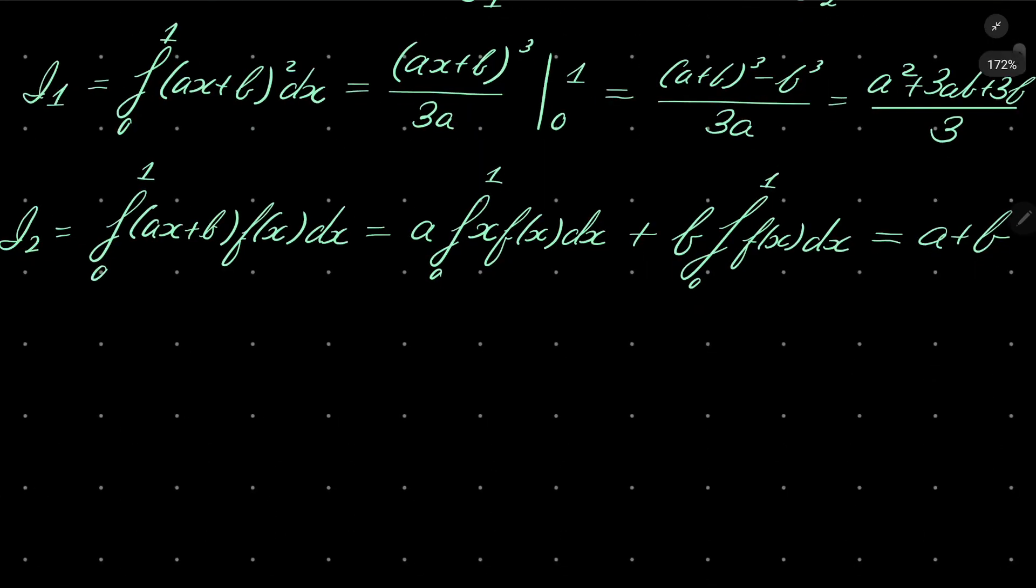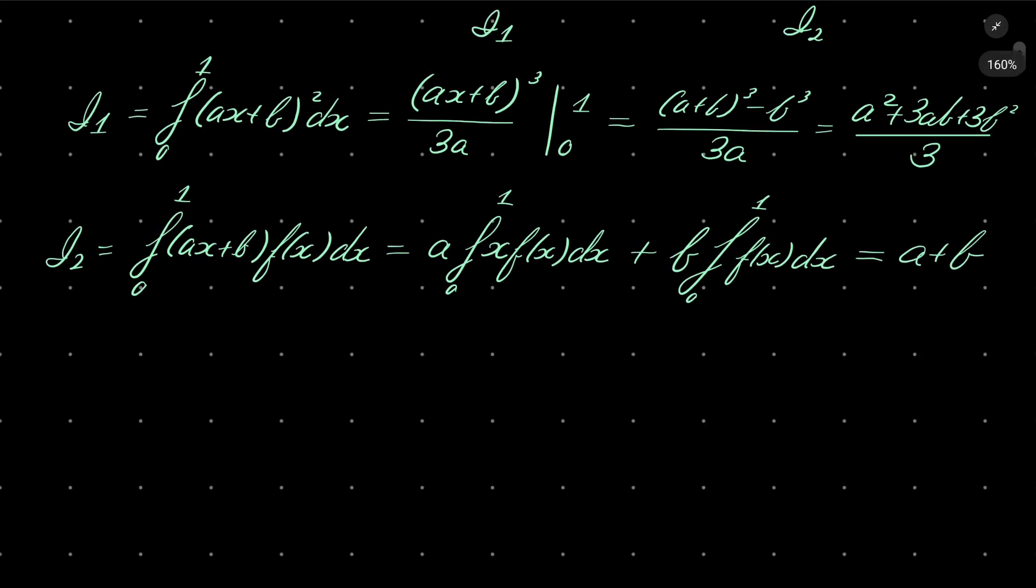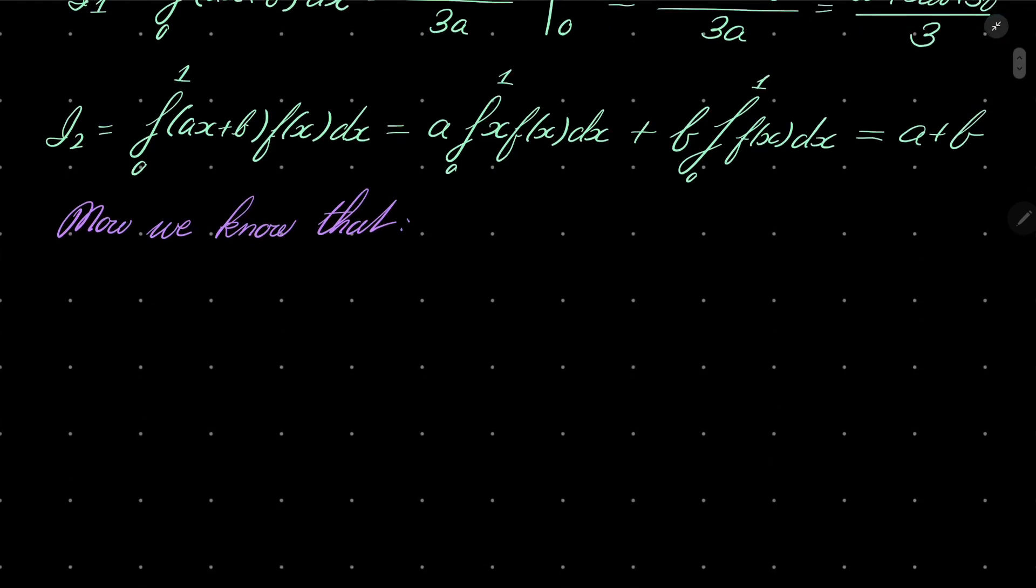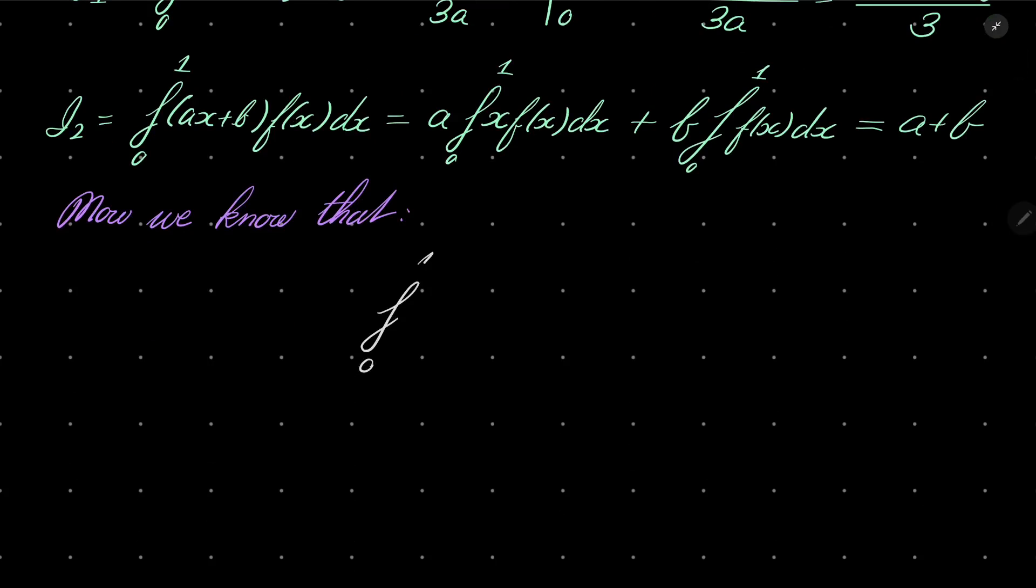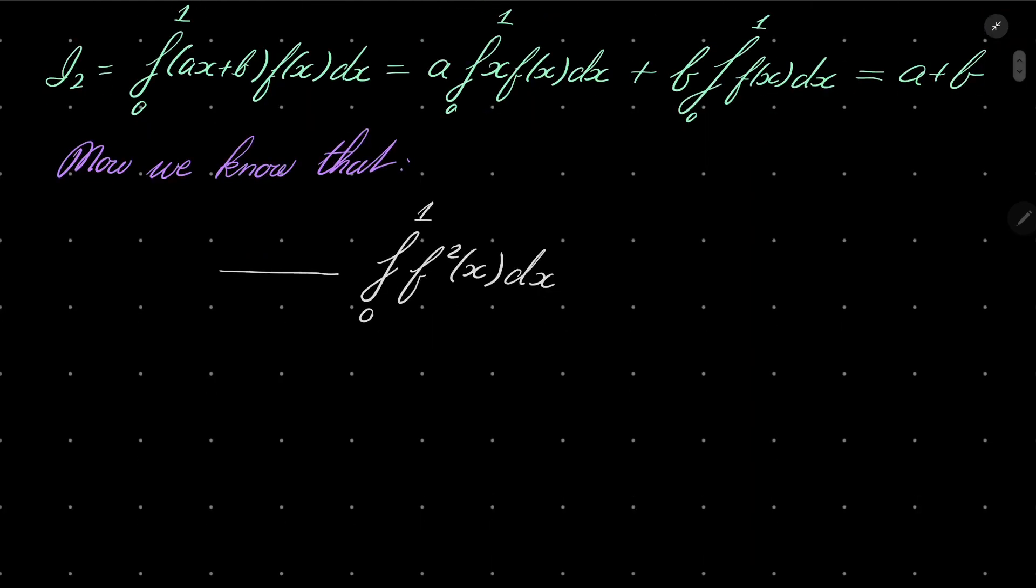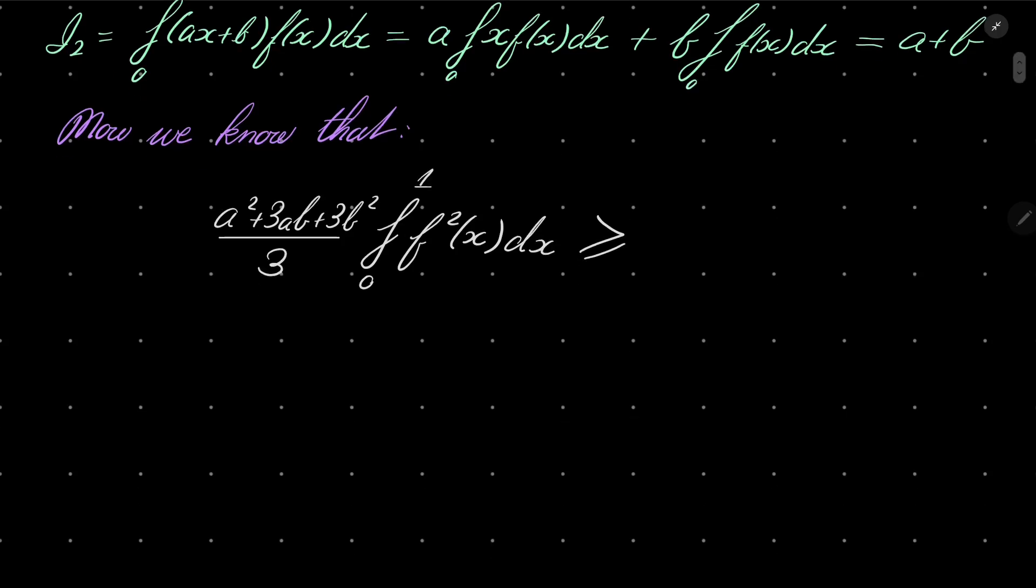That means now we know that integral from 0 to 1 of f squared of x dx times a squared plus 3ab plus 3b squared over 3 is necessarily greater than or equal to a plus b squared.